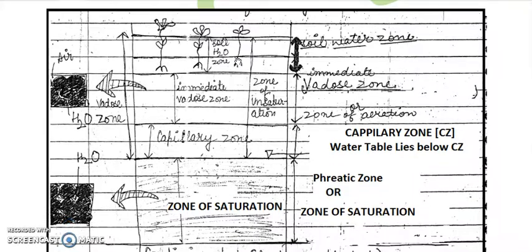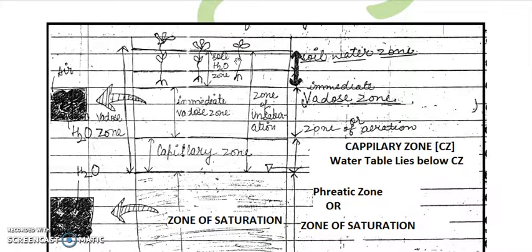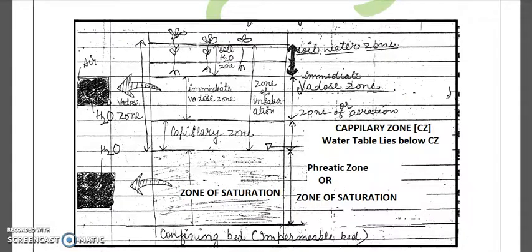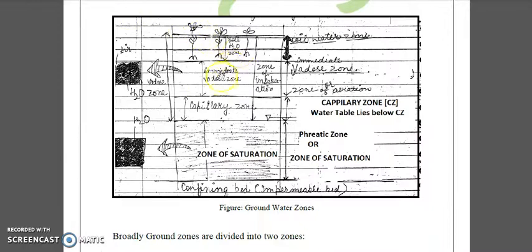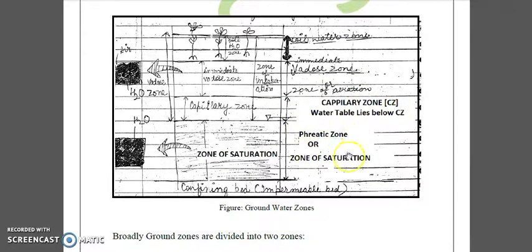As shown in the figure, we can divide the various groundwater zones. From the picture, the uppermost is the soil water zone, followed by the intermediate vadose zone — also called the zone of aeration — then the capillary zone, then the phreatic zone or zone of saturation. The water table lies below the capillary zone.